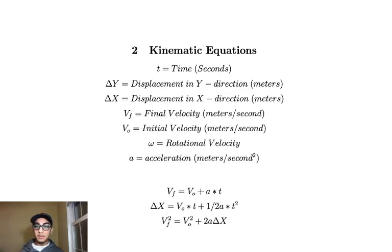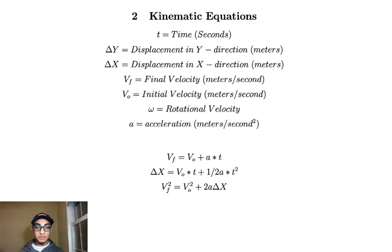So now I'm going to talk about the kinematic equations and the variable names I'm going to use today. I'm going to use t for time in seconds, delta y and delta x, delta meaning change in. It's going to be the displacement in the y and x direction, both in meters. V subscript f is going to be the final velocity in meters per second. And V0 is going to be the initial velocity. And omega is going to be our rotational velocity. I didn't put units there because it's going to change in our calculations. And A is going to be our acceleration in meters per second squared.